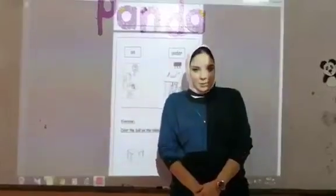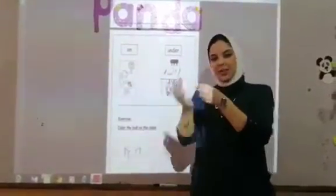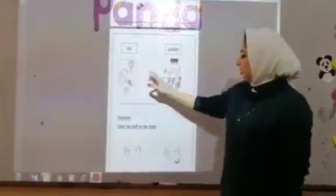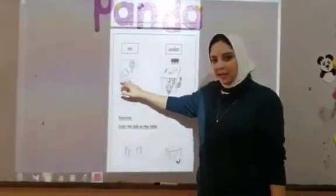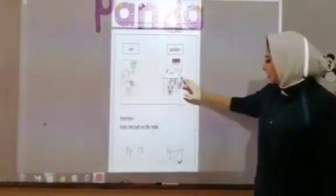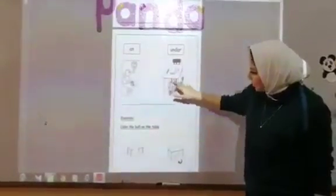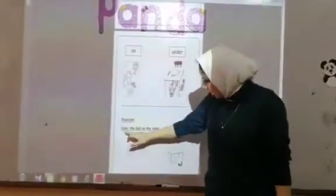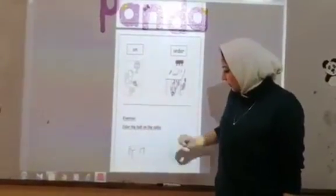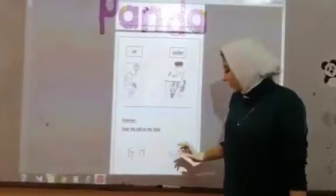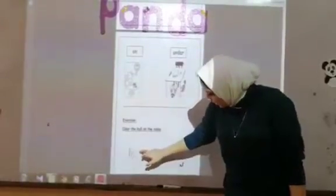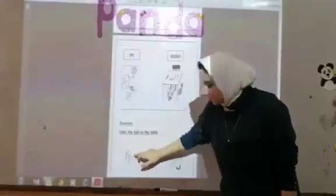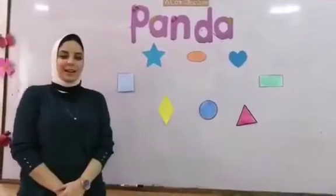Our new concept for today is 'on' and 'under.' Here, the cat is on the table. And here, the cat is under the table. I want to color the board on the table — which one is on the table? This one — the board is on the table.